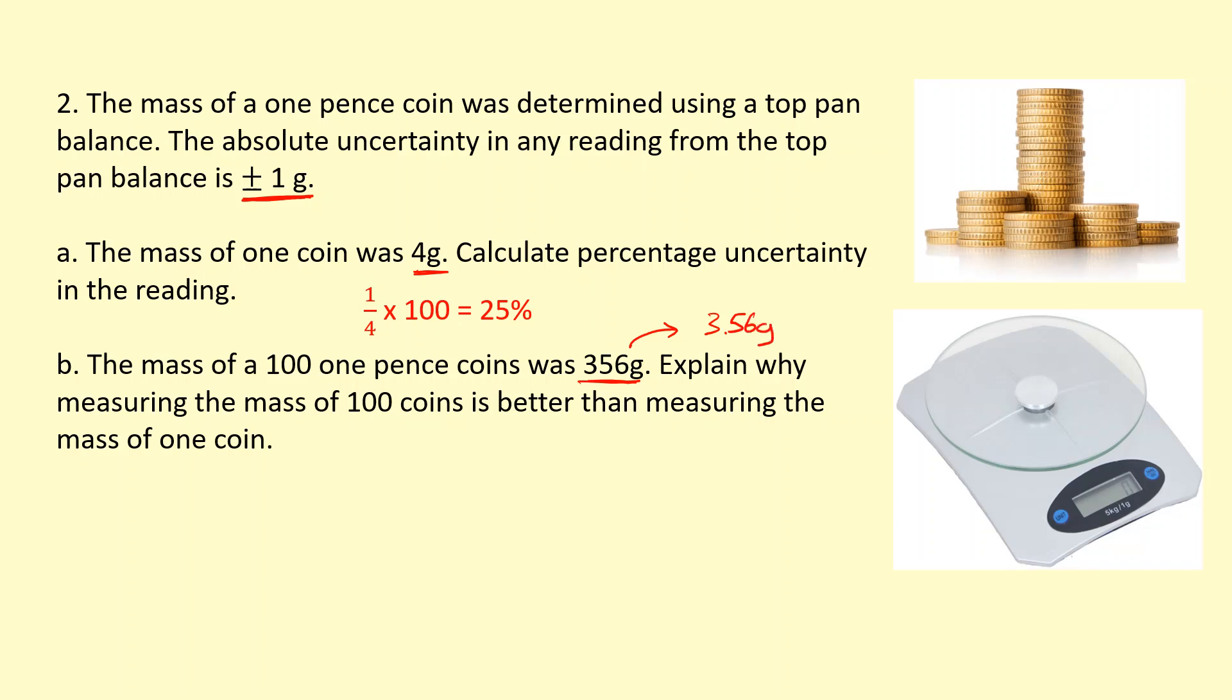Explain why this is better. So we want to find the percentage uncertainty in the mass of 100 coins. The absolute uncertainty is fixed. It's still plus or minus 1 gram. So if I do 1 divided by 356, I get a percentage uncertainty in the mass of 100 coins of 0.28%.